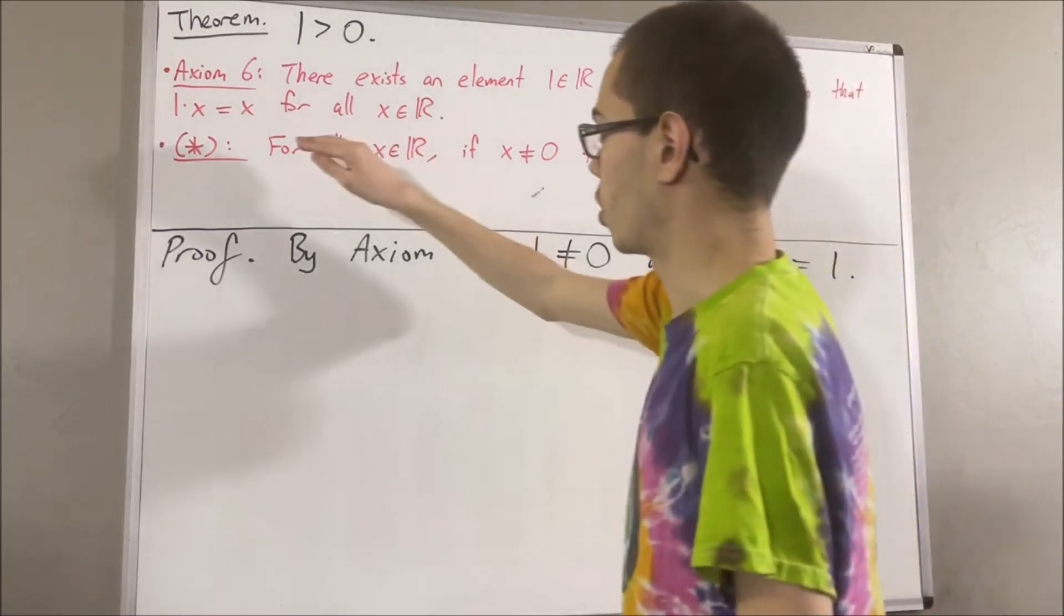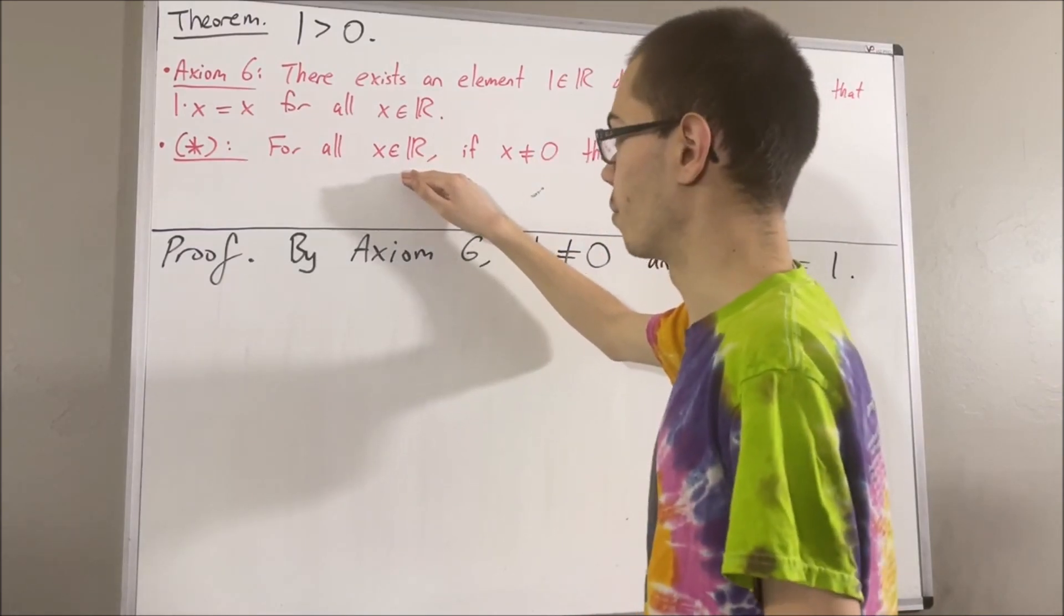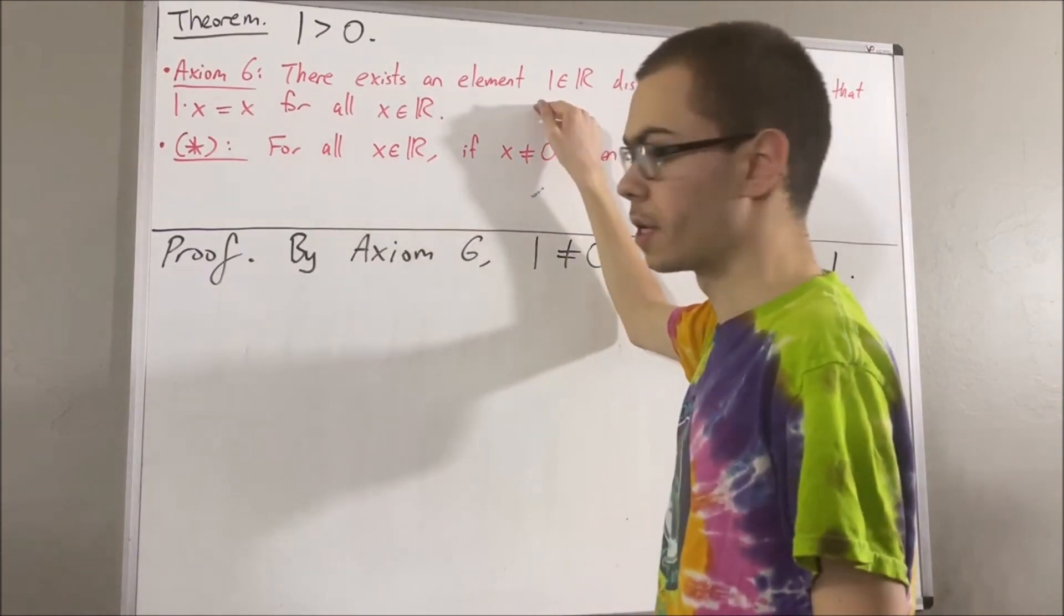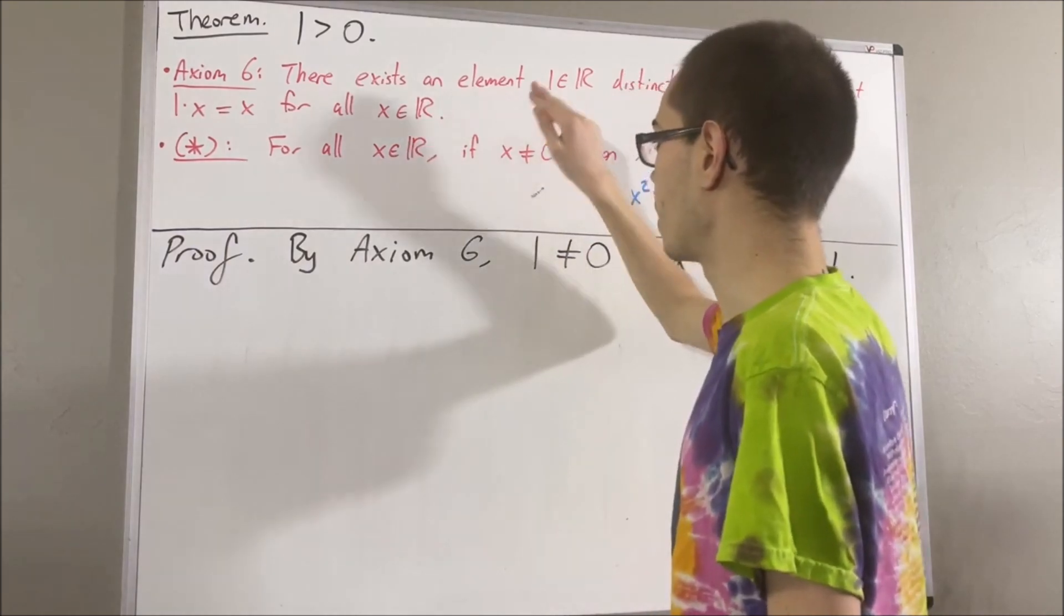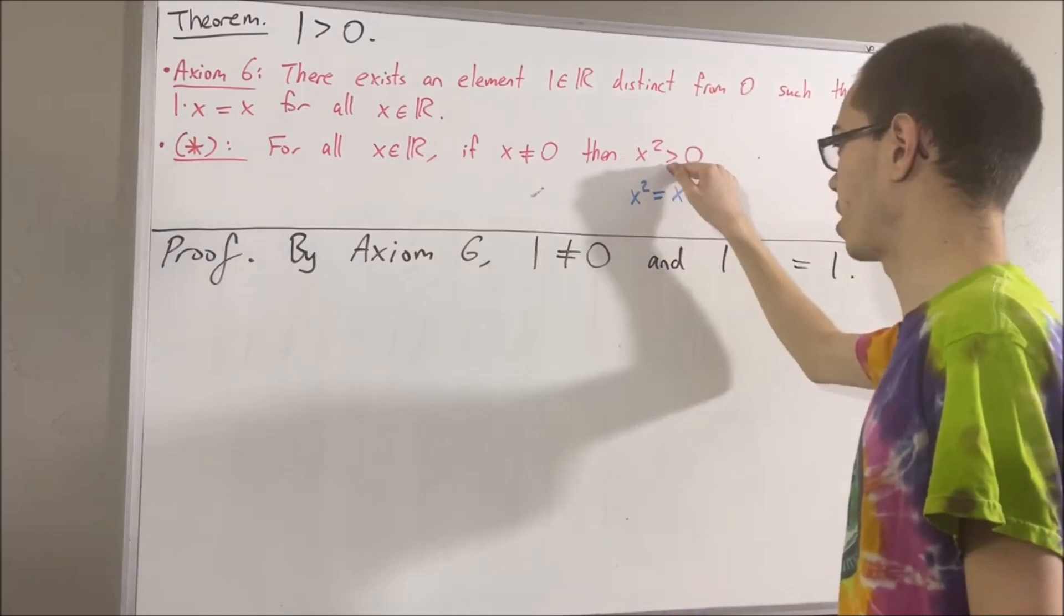And now, remember, the preliminary result works for every real number. So in particular, it must work for the real number 1. So taking x to be 1, we have: if 1 is not equal to 0, then 1 squared is greater than 0.